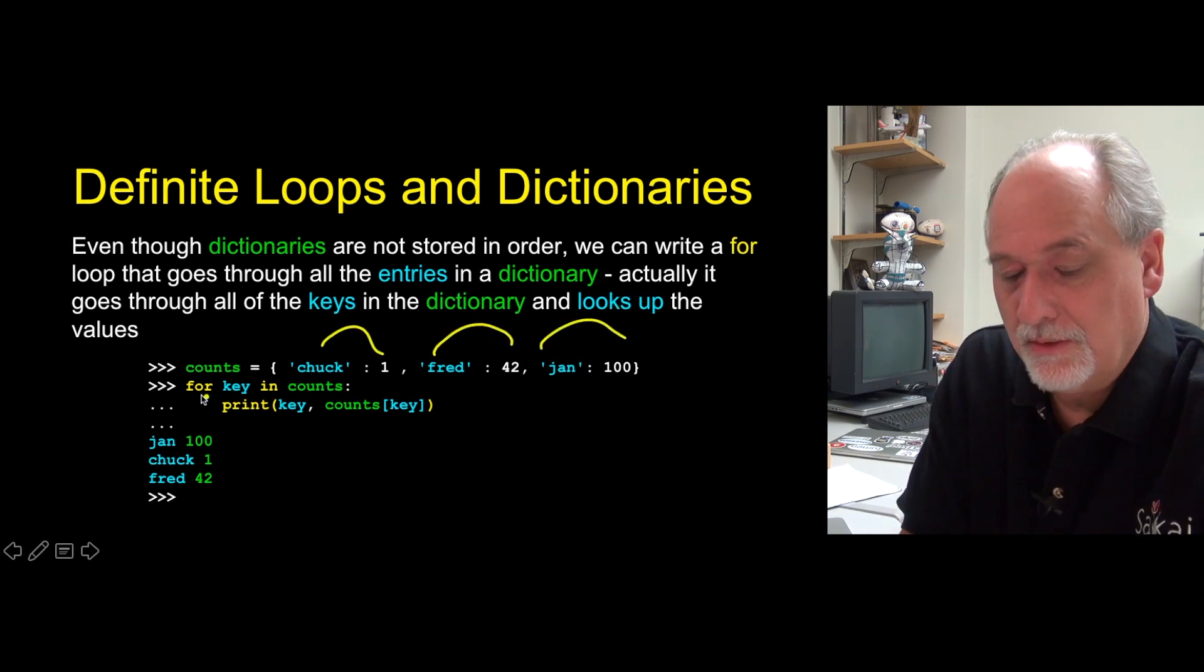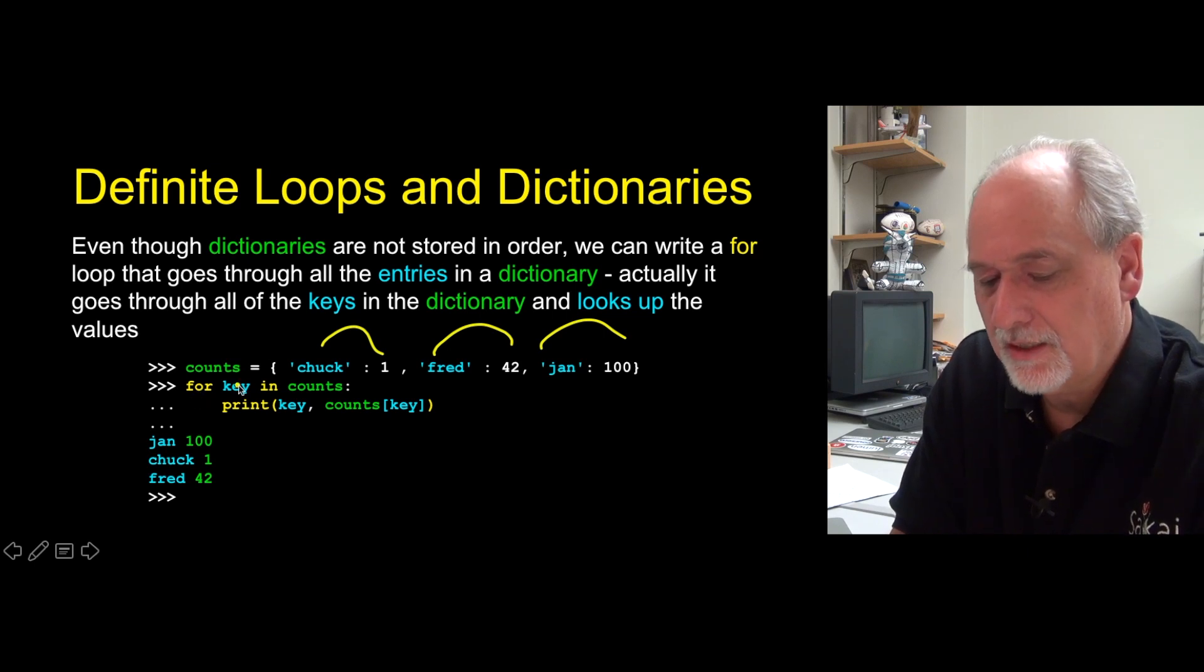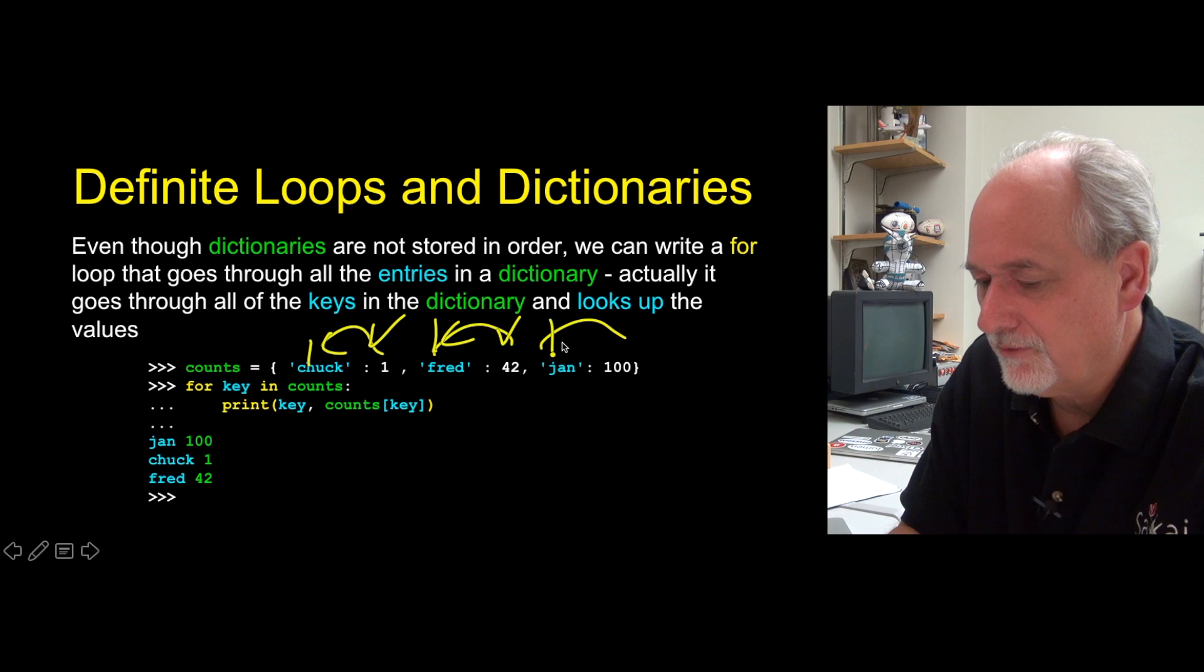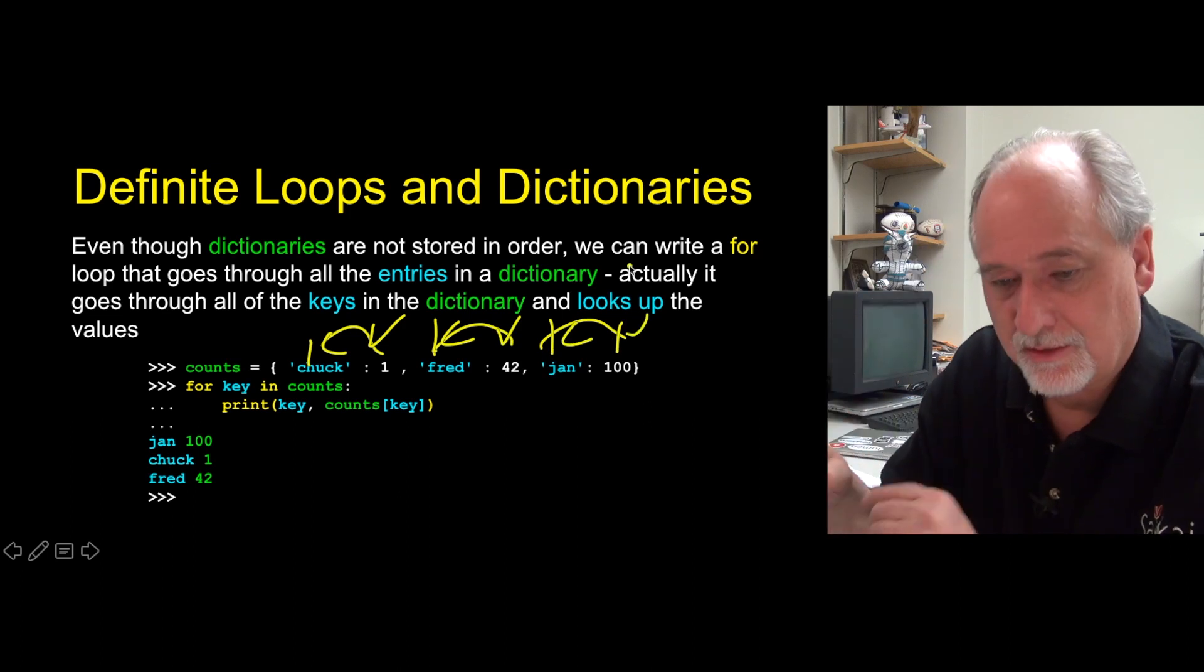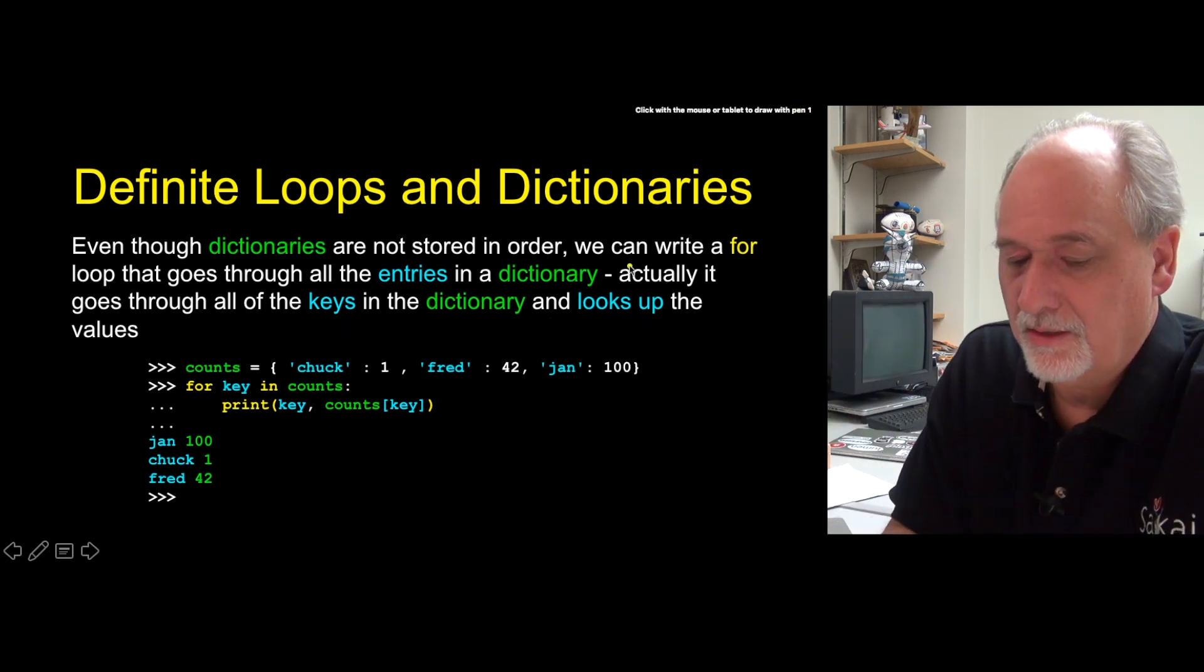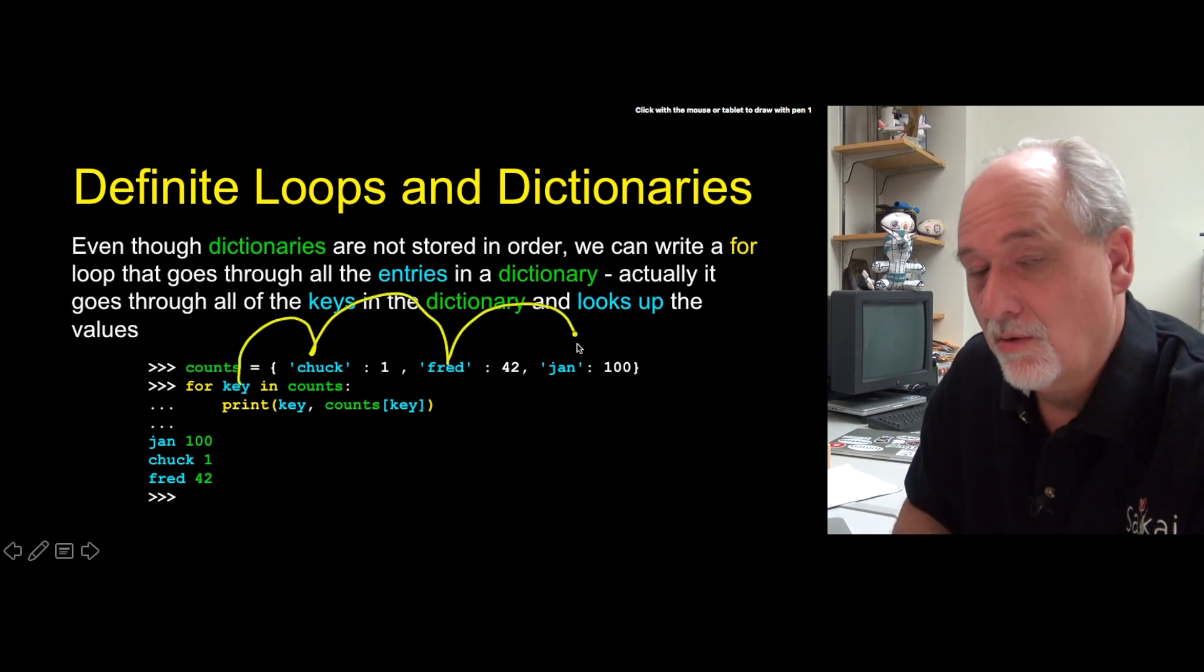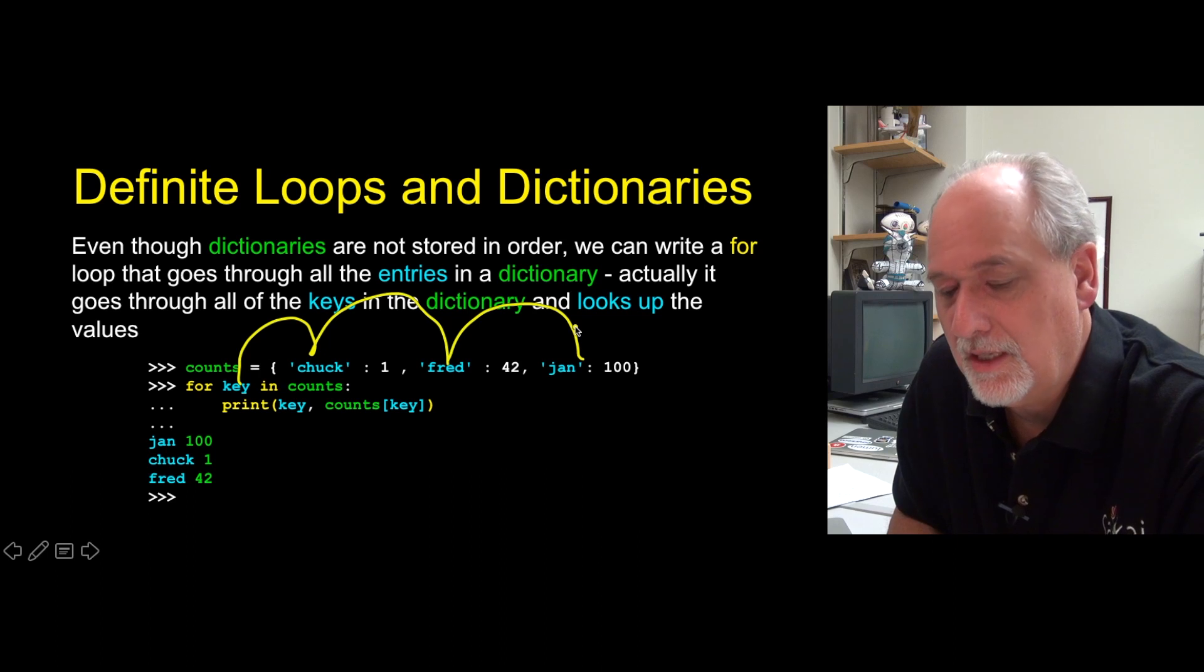And so we're going to use a definite loop with the for, for key and counts. Now it doesn't have to be main key, but key is a good name, because these are keys and values. K, V, K, V, keys and values. I just mentally think of this as keys and values and keys and values. So this iteration variable is going to walk the keys. It's not going to walk the values. It's going to walk the keys.